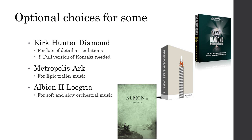There are also a few optional choices. Kirk Hunter Diamond is interesting if you want a lot of detail in articulations and a lot of choice — but keep in mind you need the full version of Kontakt. Metropolis Arc could also be a good choice if and only if you are into epic trailer music. And finally, Albion 2 Logria could be interesting as a first library if you're only into soft and slow orchestral music.